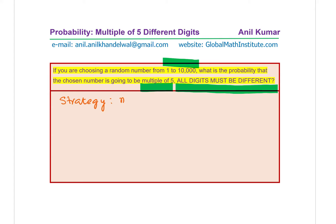When we say multiple of 5, it means what? It means that the last digit is either 0 or it is 5. So that is one thing.